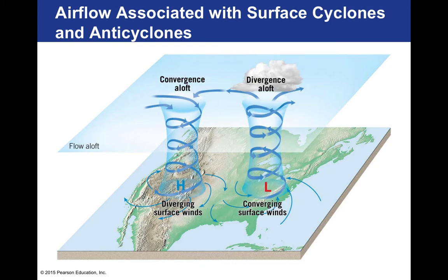Regarding airflow associated with surface cyclones and anticyclones: high pressure areas have diverging surface winds, meaning winds move away from high pressure. Low pressure areas have converging winds, meaning wind always moves towards those pressures. This happens in three dimensions, not just two. Air in a high pressure system always comes down, associated with clockwise rotation. For a low pressure system with rising air, you always associate counterclockwise rotating wind.